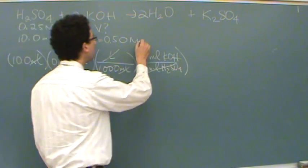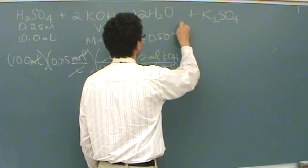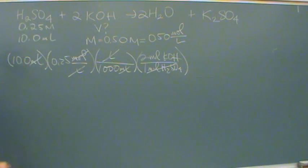I want to remember that molarity is 0.50 moles per liter. So in this case, I have moles of KOH in the calculation. If I invert my molarity, the moles will cancel, and I just have volume left.